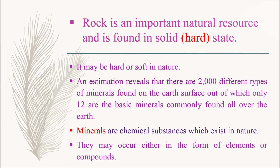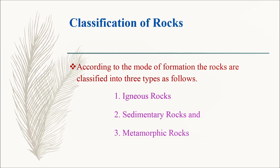Rock is an important natural resource and is found in solid state — it may be hard or soft in nature. An estimation reveals that there are 2,000 different types of minerals found on the earth's surface, out of which only 12 are the basic minerals commonly found all over the earth. Minerals are chemical substances which exist in nature and may occur either in the form of elements or compounds.